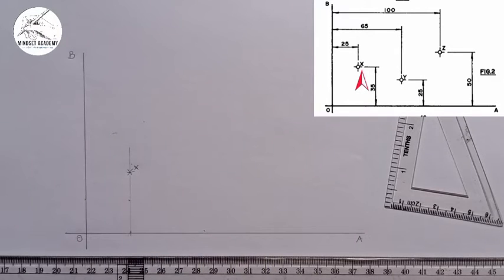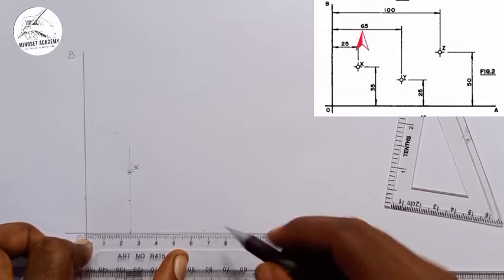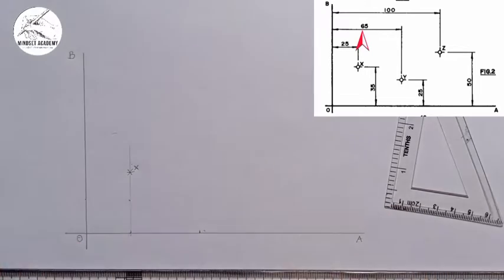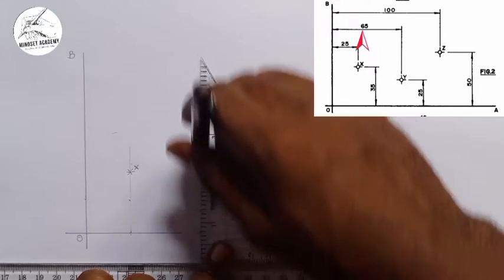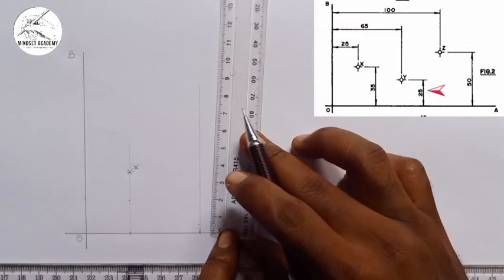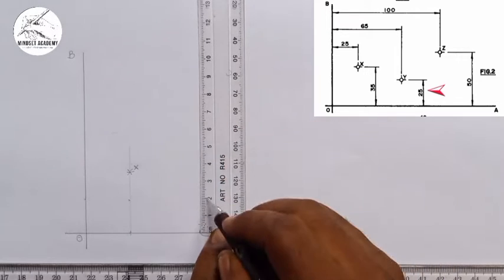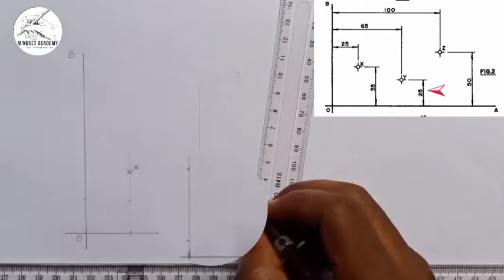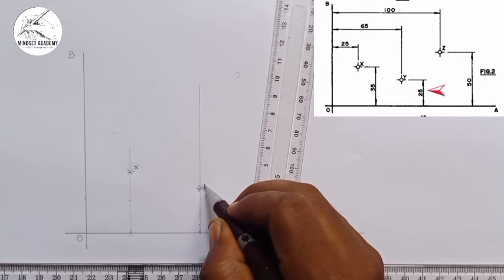Now the next thing is point Y. Point Y is located 65 away from OB. So this is the line of OB and now 65, this is 65 here. So on the point of 65 I'll draw a vertical line upward this way. Then on that line I'm going to measure 25 which will give me point Y. So at that point I'll draw my asterisk, that'll be my point Y.